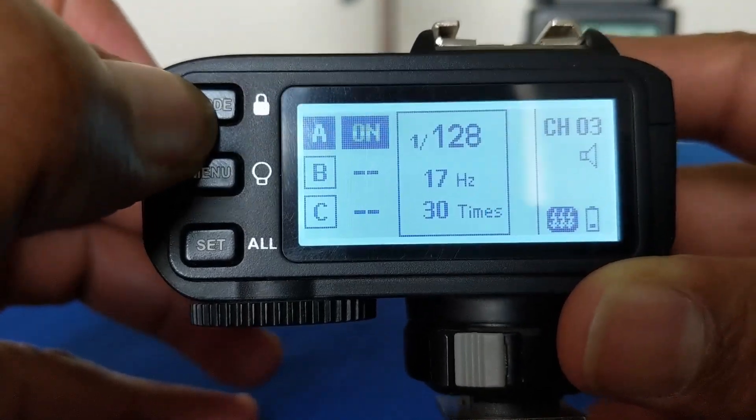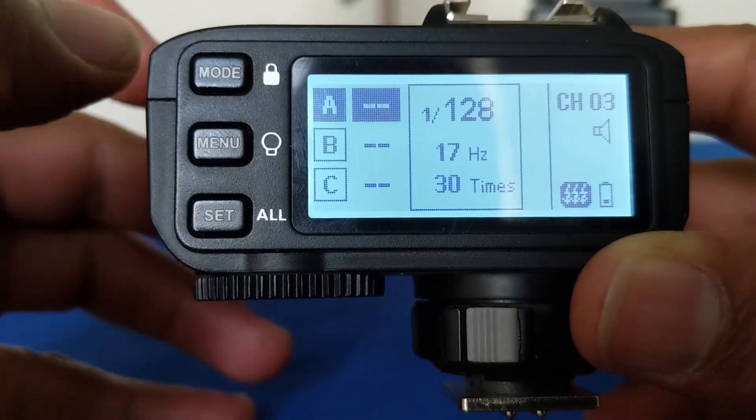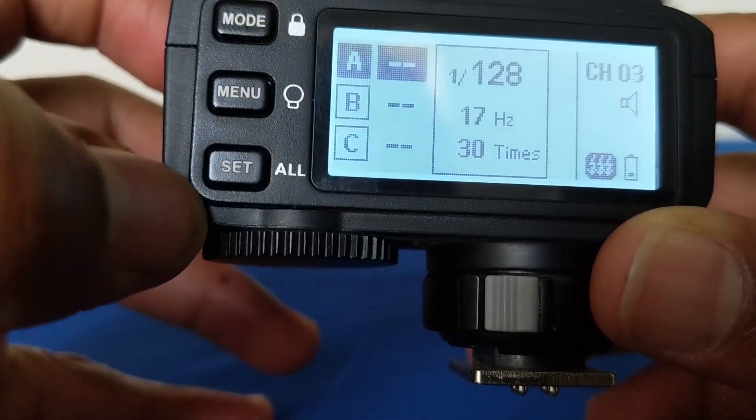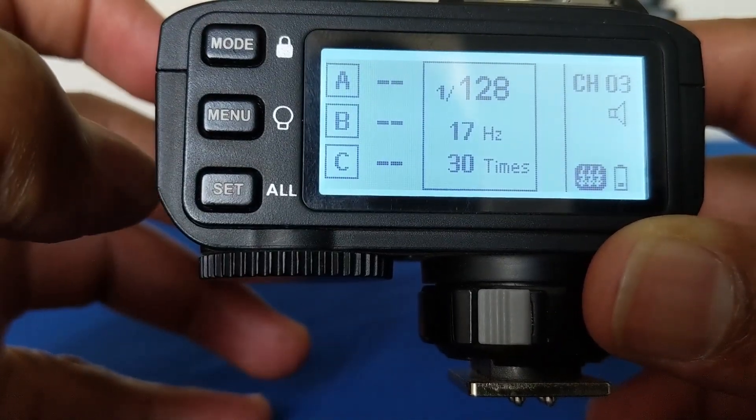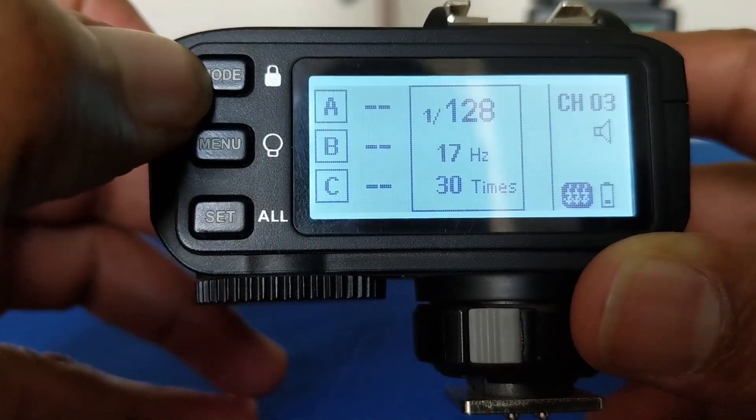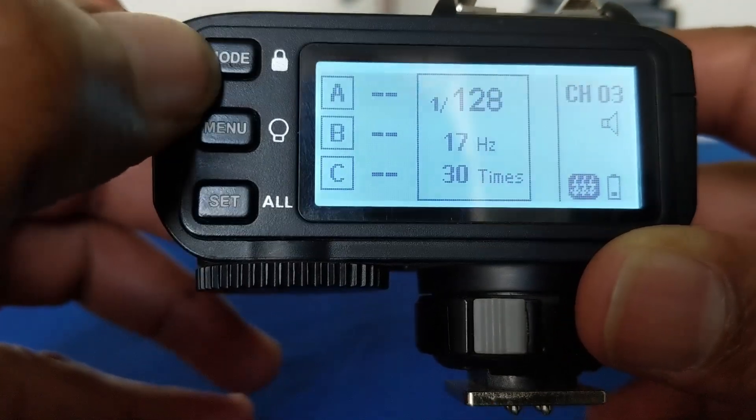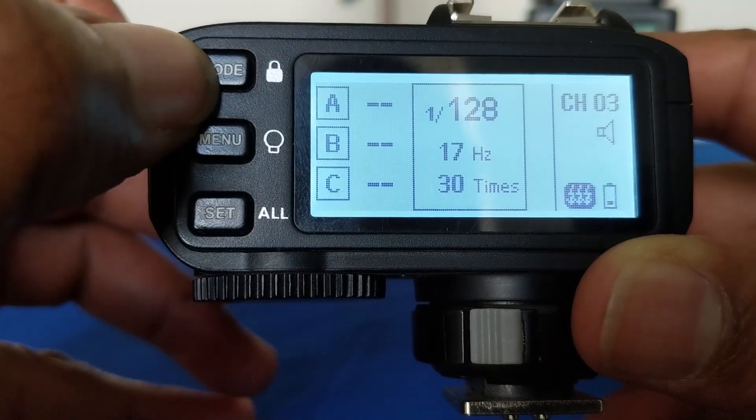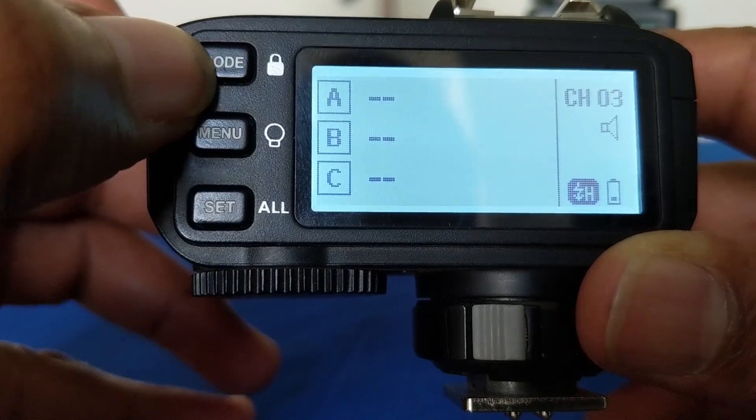If you cannot get the M mode, first of all make sure that nothing is highlighted by clicking SET. Now the mode button will take you between multi-flash and high-speed sync.